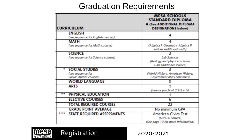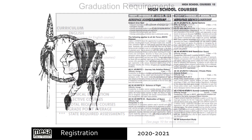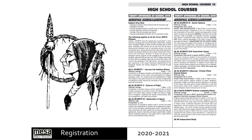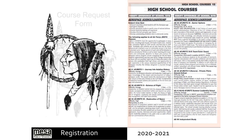Diploma requirements and additional diploma designations can be found on pages two through three of the Course Description Catalog. All students must complete the required coursework and pass the American Civics Test. The Course Description Catalog provides the course number, a description of the course, and credits awarded for the course.